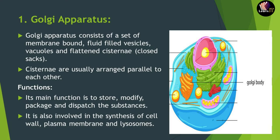These cisternae are usually arranged parallel to each other, one upon another. The basic functions of the Golgi apparatus are: to store, modify, and package substances for dispatching within the cell; to help in the synthesis of the cell wall and plasma membrane; and also to help in the synthesis of lysosomes.